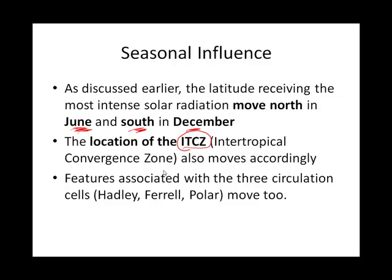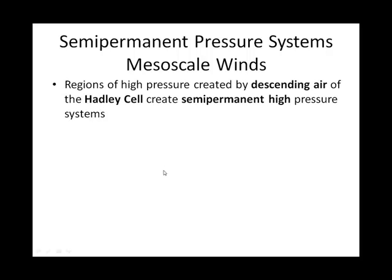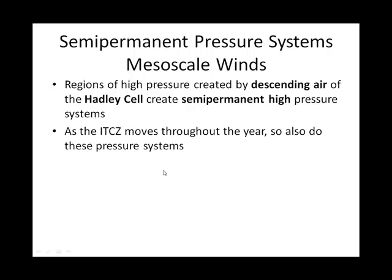As the intertropical convergence zone wanders — remember, that's the boundary between the two Hadley cells — then everything else wanders too. Before we talk about the wandering intertropical convergence zone, I want to talk about these general ongoing regions of high pressure. They are seasonal too, as I'll show you in a minute.